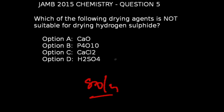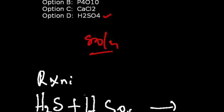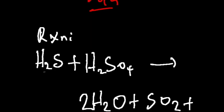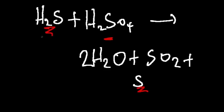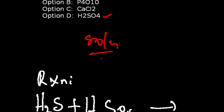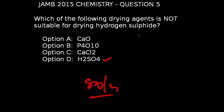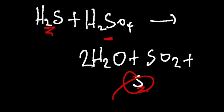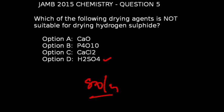Question 5 of JAM 2015 chemistry exams: Which of the following drying agents is not suitable for drying hydrogen sulfide? The correct answer is sulfuric acid. When hydrogen sulfide reacts with sulfuric acid, hydrogen sulfide tends to reduce sulfuric acid to sulfur, producing a chemical reaction. For any drying agent to be suitable, it must not react with the gas being dried. Since sulfuric acid reacts with hydrogen sulfide, it is not suitable.